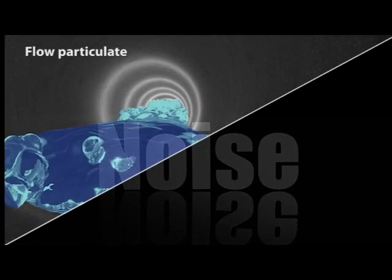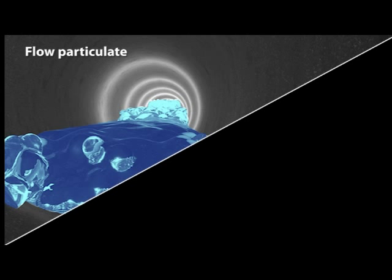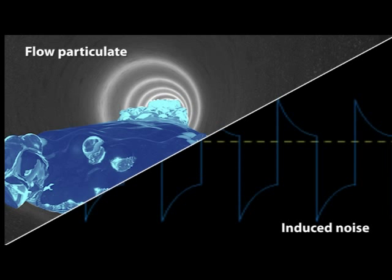Noise is introduced two ways into the average magnetic flow signal: one is by flow particulate, and the other is by induced noise.